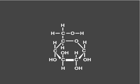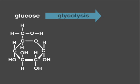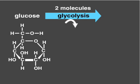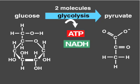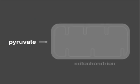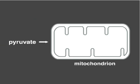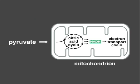Cells break down food molecules, such as glucose, through multi-step pathways. In the process of glycolysis, the breakdown of one glucose molecule into two 3-carbon molecules produces a net gain of energy captured by the molecules ATP and NADH. In eukaryotes, the breakdown product pyruvate is imported into mitochondria, where it ultimately feeds into the citric acid cycle and the electron transport chain.